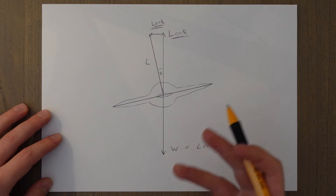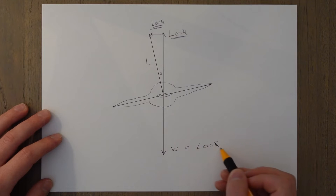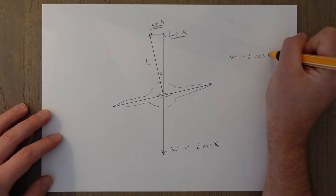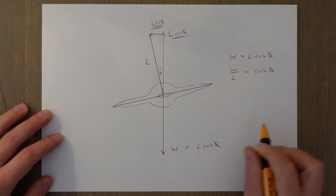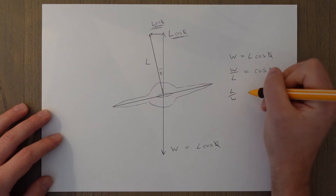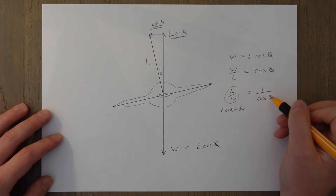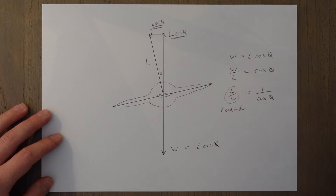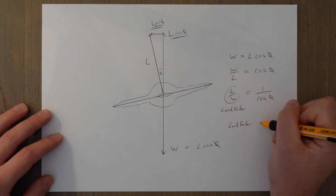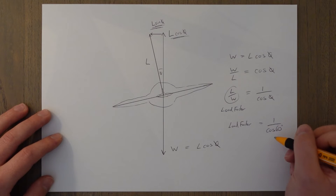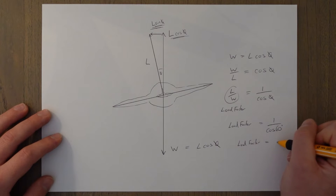We therefore need to increase the amount of lift in a turn, so that our vertical component is still sufficient to balance out the weight. We can calculate the extra lift needed using the load factor, which is the ratio of lift to weight. Starting with weight equals lift cosine theta, we rearrange to get lift over weight equals one over cosine theta — and lift over weight is the load factor. So for a 60-degree angle of bank: load factor equals 1 over cosine 60 degrees. Cosine 60 equals 0.5, so 1 over 0.5 is 2 — load factor equals 2.